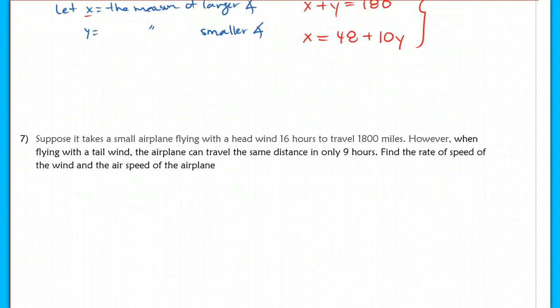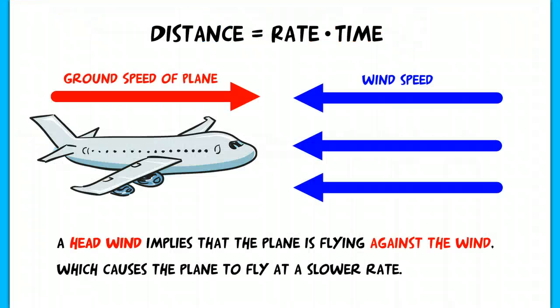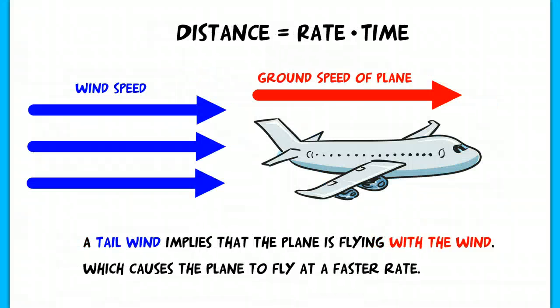And problem number seven, it's asking you about a plane and it's flying with a head and a tailwind. I want to define these first for you before we try to set up this problem. A headwind implies that the plane is flying against the wind. The plane is going to fly at a slower rate because the wind is pushing against the plane. We call the speed of the plane the ground speed because overall, we're going to use the idea that distance equals rate times time in order to set up this particular system of equations. The rate that we want to use is the rate after we factor in the wind speed. A tailwind, on the other hand, is coming at the tail of the plane from the back end of the plane, so it's actually aiding the plane in its flying. It makes it go faster actually than it normally would if we were just looking at the ground speed of the plane. The tailwind helps the plane go faster. The headwind makes it go slower.